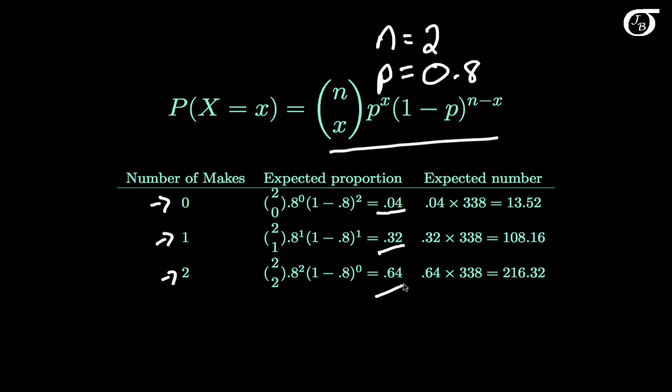And 64% of the time we would expect him to make both. To get our expected counts, we simply multiply these probabilities by the total number of pairs of free throws — 338. We work out that we would expect 13.52 occasions where he missed both, 216.32 where he made both, and 108.16 where he made one and missed one.